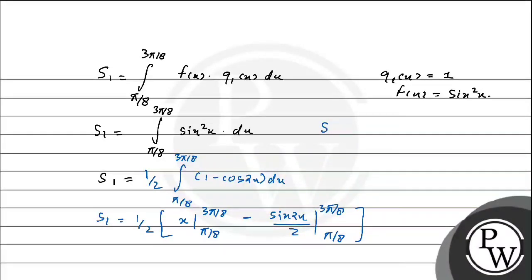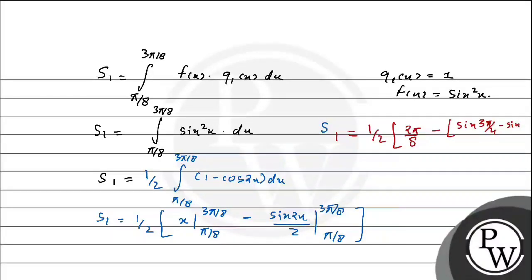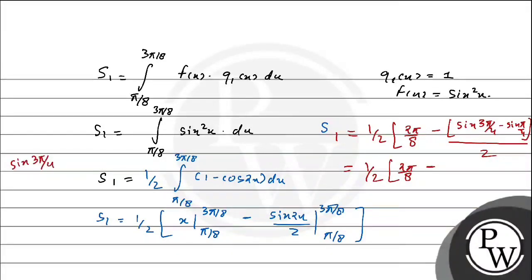S1 = (1/2) of [x − sin 2x / 2] from π/8 to 3π/8. x की limit: 3π/8 − π/8 = 2π/8. sin 2x की limit: पहले 3π/8 put करें तो sin(3π/4), फिर π/8 put करें तो sin(π/4). sin(3π/4) = 1/√2 और sin(π/4) = 1/√2, तो 1/√2 − 1/√2 = 0, cancel out हो गया।